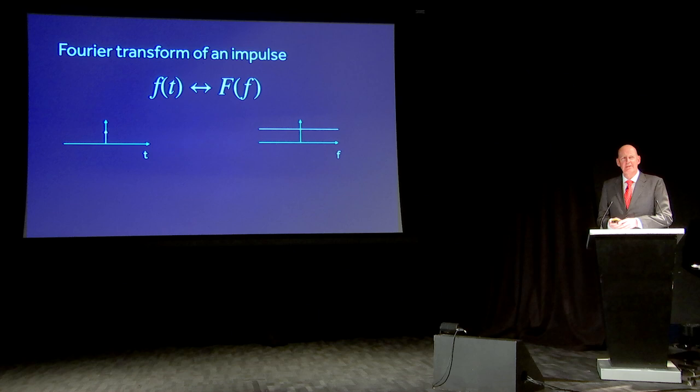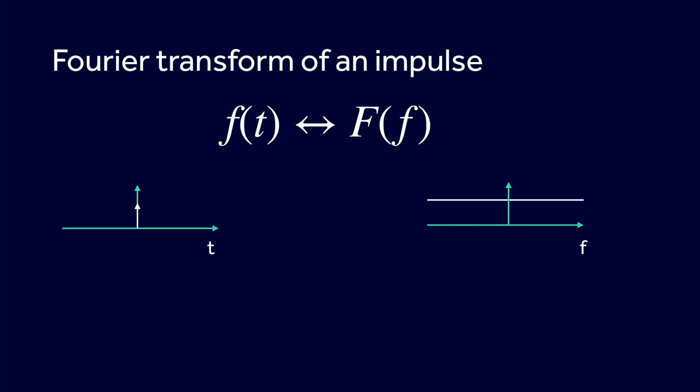This highly localized thing in the time domain contains all frequencies — which is one reason impulse testing is often used in mechanical engineering. If you tap something with a hammer, it excites all frequencies in the system. In the old days of steam trains, somebody would go around tapping wheels with a hammer to provide an input containing all frequencies; if there was a defect in the wheel, there would be enough spectral energy in the impulse to excite that defect. Such people are known as wheel tappers.